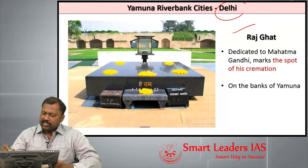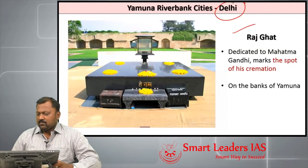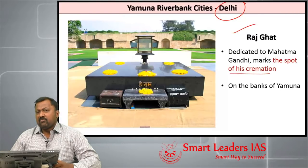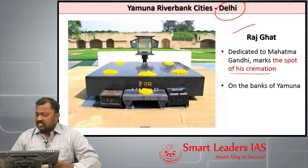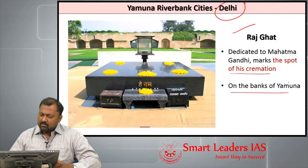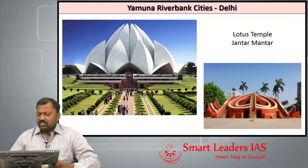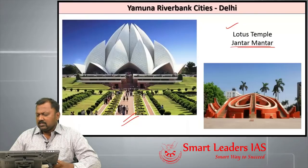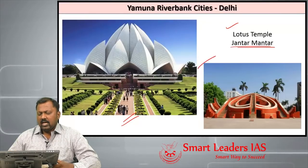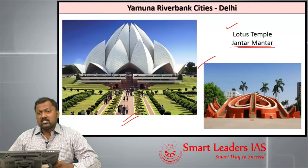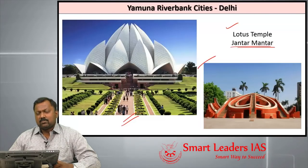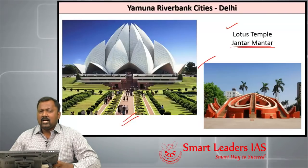Rajghat is located in Delhi on the banks of river Yamuna. It is the place where the Father of the Nation, Mahatma Gandhi, was cremated after his death in 1948. Other important structures in Delhi include the Lotus Temple and Jantar Mantar. Jantar Mantar is an astronomical observatory built by Raja Jai Singh — there is a series of Jantar Mantars across India, which will be discussed in subsequent slides.